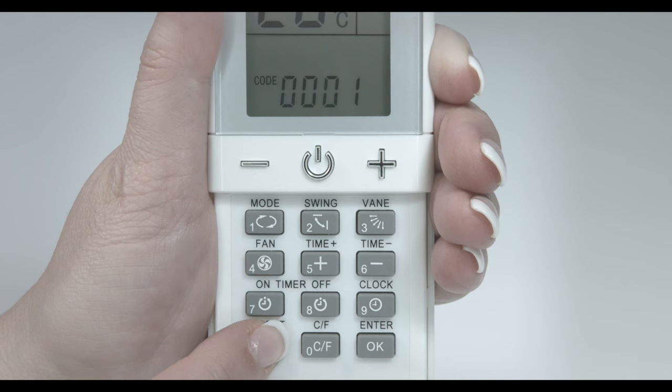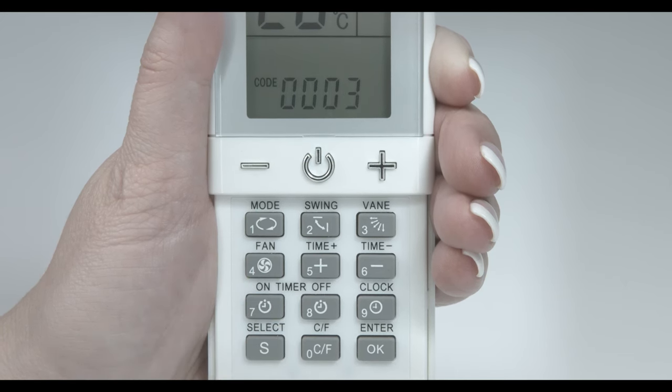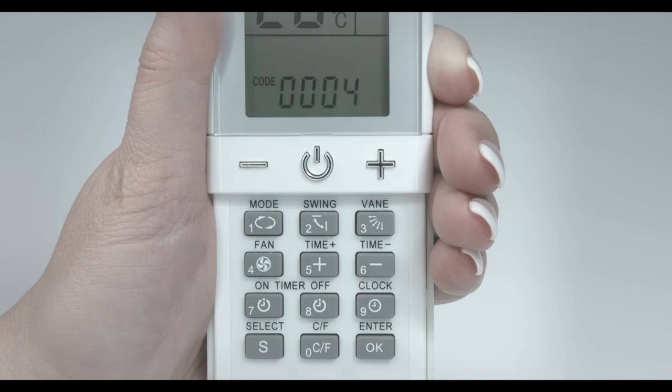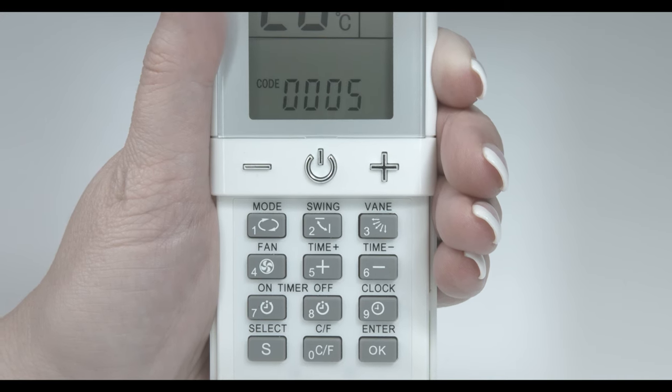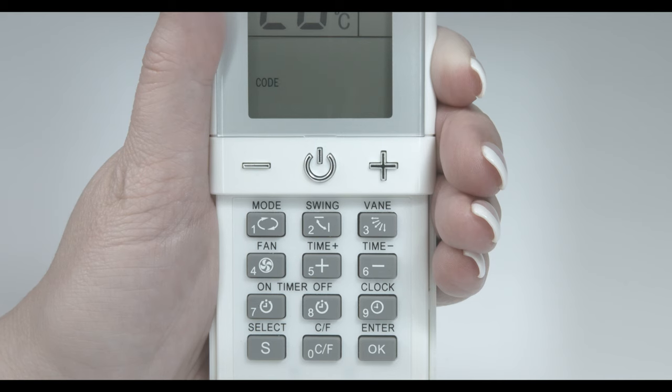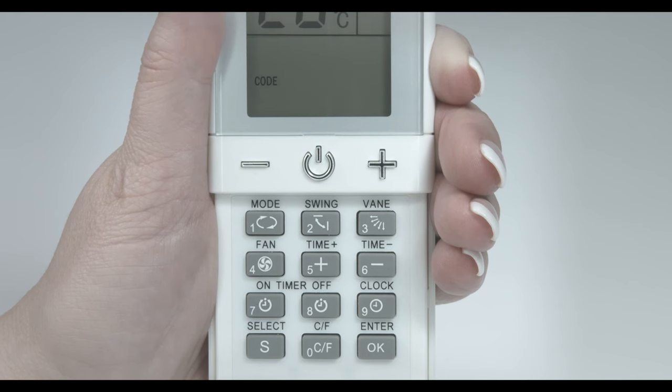Release when you see the code numbers start to advance. The remote is now scanning through its library of 2,000 codes, looking for a match to your heat pump. Make sure the remote is pointed towards your heat pump while it is scanning.